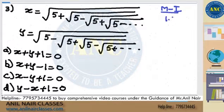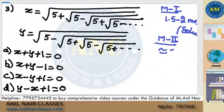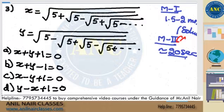Method 1 takes 1.5 to 2 minutes to solve the question. Method 2 is the ANC method. Listen carefully how I am solving the question. This question will take maximum 20 seconds to solve if you know the approach. Method 1 is the traditional method; Method 2 is the ANC method.